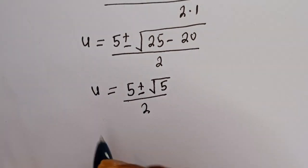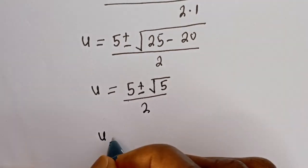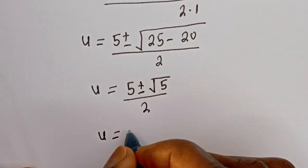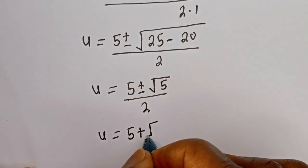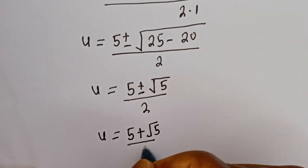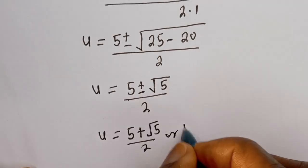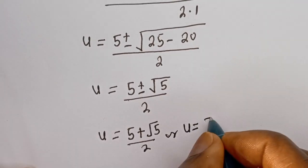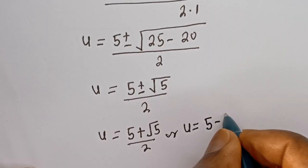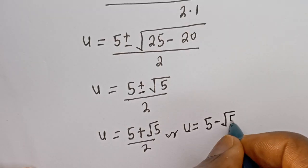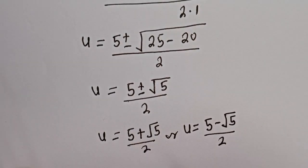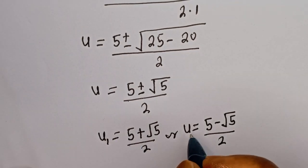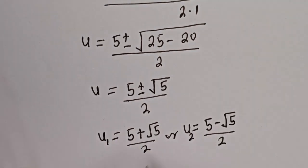Therefore, u1 is equal to 5 plus the square root of 5, divided by 2, or u2 is equal to 5 minus the square root of 5, divided by 2. We have gotten the values of u1 and u2, so we can now solve for v.